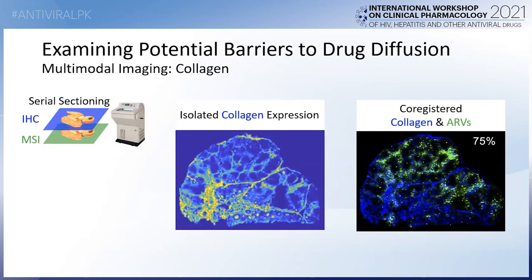We can also combine MSI with microscopy in a multimodal approach using serial sections. We've combined IHC staining for collagen with MSI data to assess potential barriers to drug diffusion. The isolated collagen expression from IHC staining is shown, and through a co-registration process we can overlay the drug distribution on top of the collagen distribution to assess not only co-localization but also the extent to which the drug distribution is affected by the collagen. We found that 75% of total collagen expression is co-localized with at least one detected drug, with co-localization highest among the more lipophilic drugs — maraviroc and efavirenz.